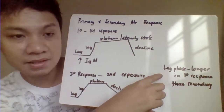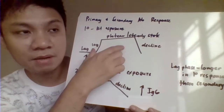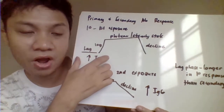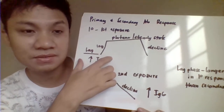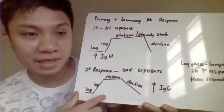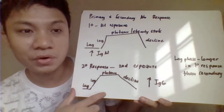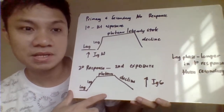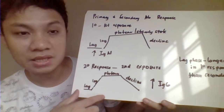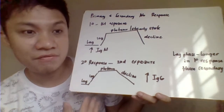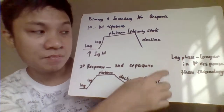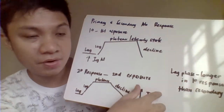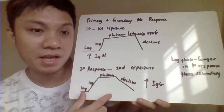The secondary immune response also has lag, logarithmic, plateau, and decline stages, but produces IgG antibody. Another difference is that the primary antibody response has a longer lag phase because it is the first encounter with the antigen. In the secondary response, since the antigen has already been encountered, there is less orientation needed and IgG antibody production proceeds faster, giving a shorter lag phase.